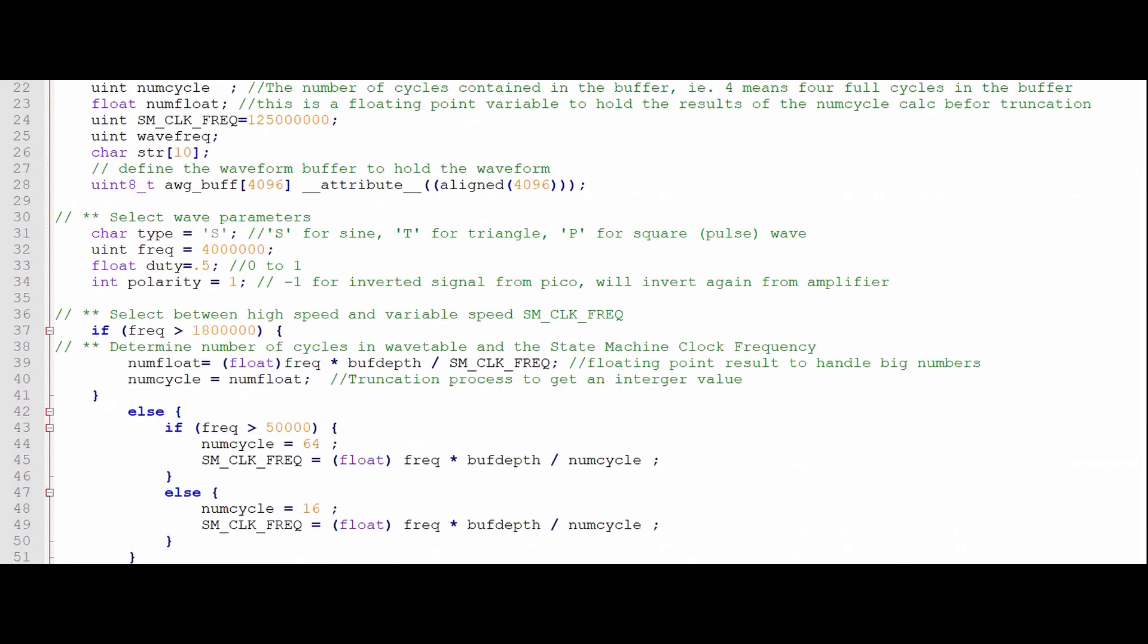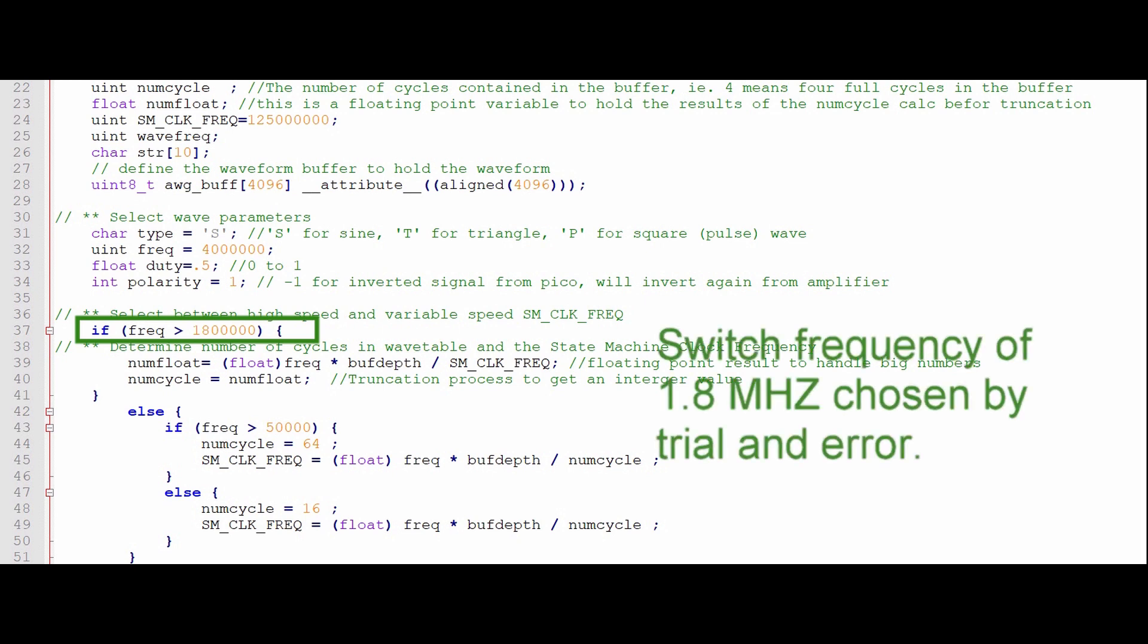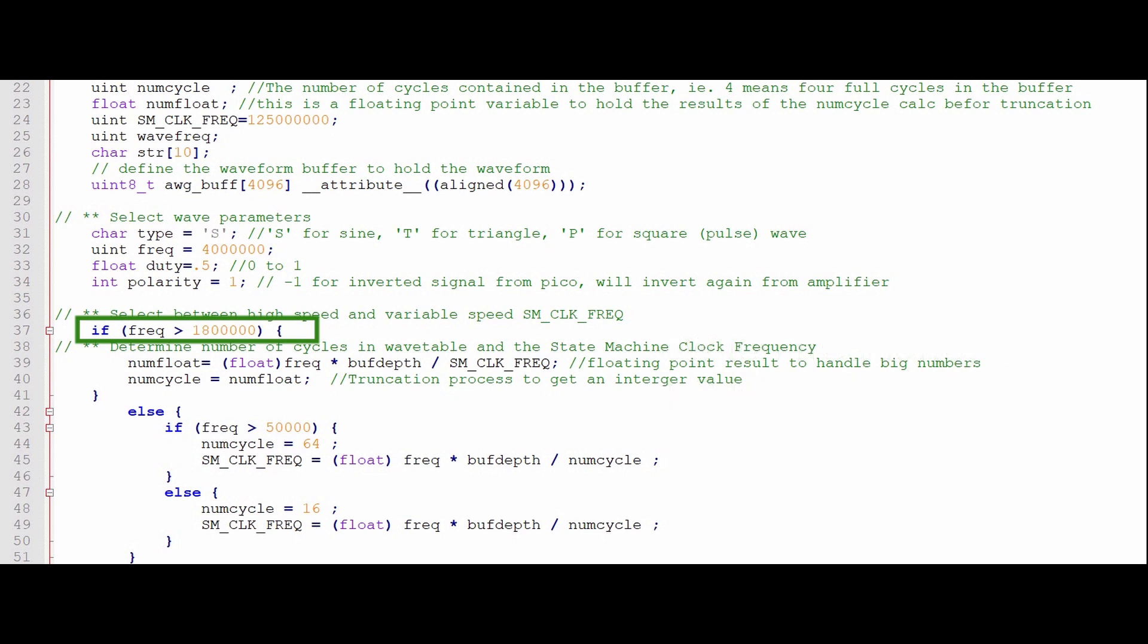Added a switch for low frequency or high frequency methods. As we discussed, the low frequency method varies the state machine clock frequency as needed to achieve the desired output frequency. This is the same as the fast AWG program presented in episode 15.